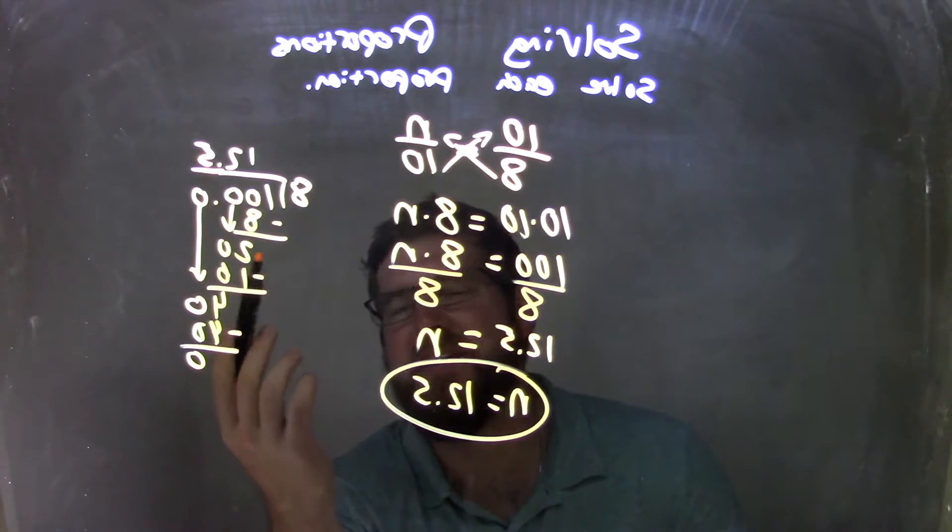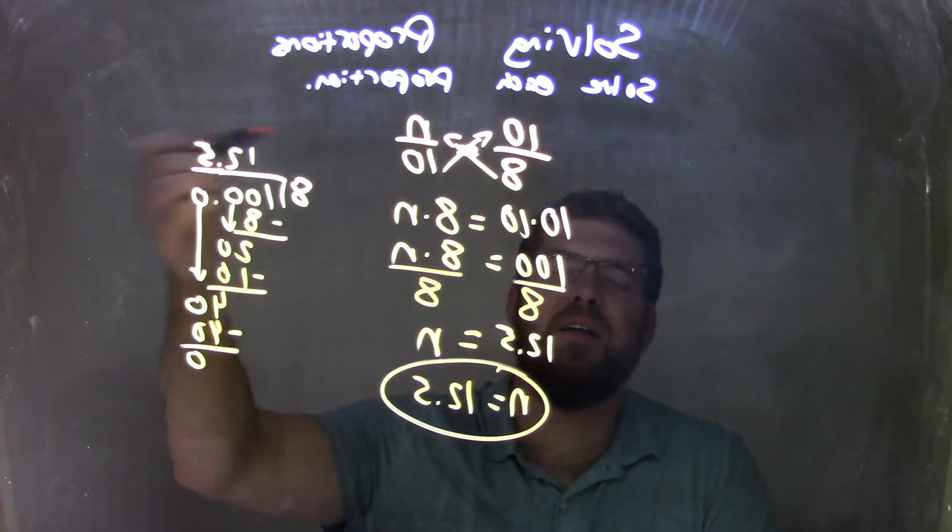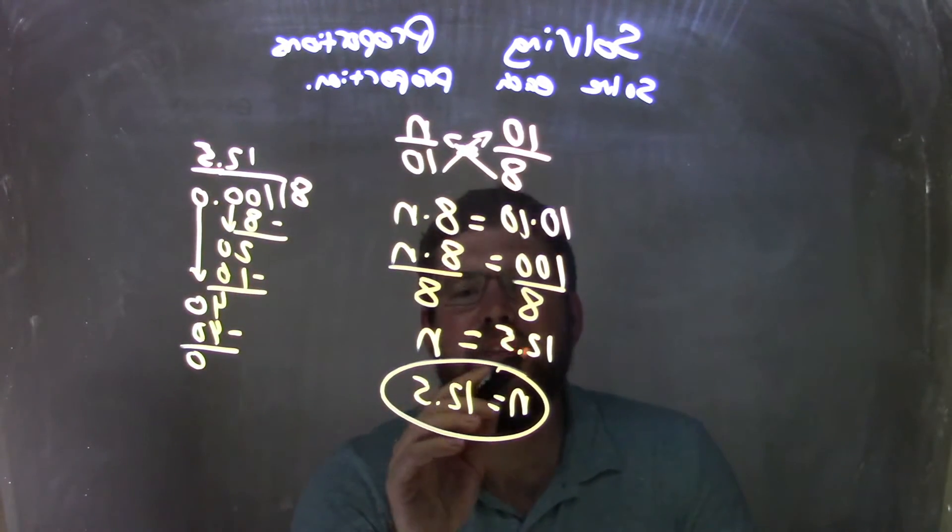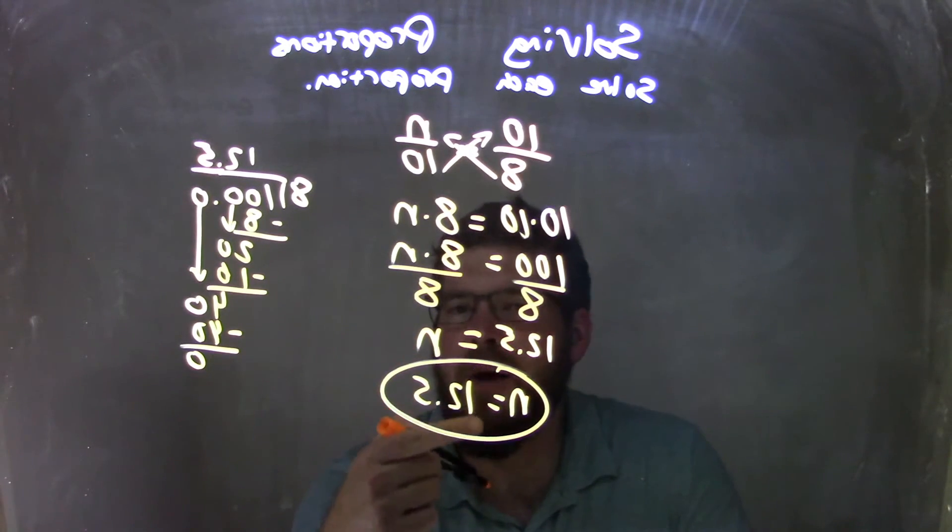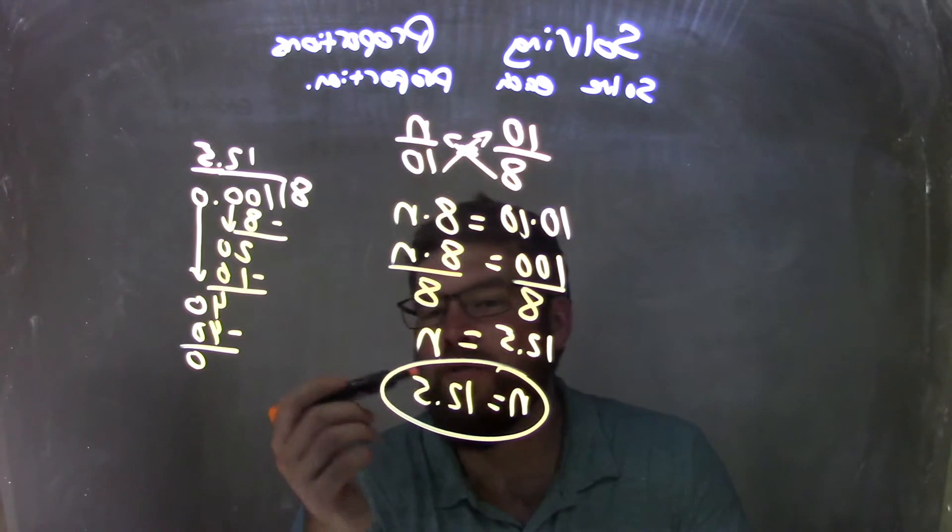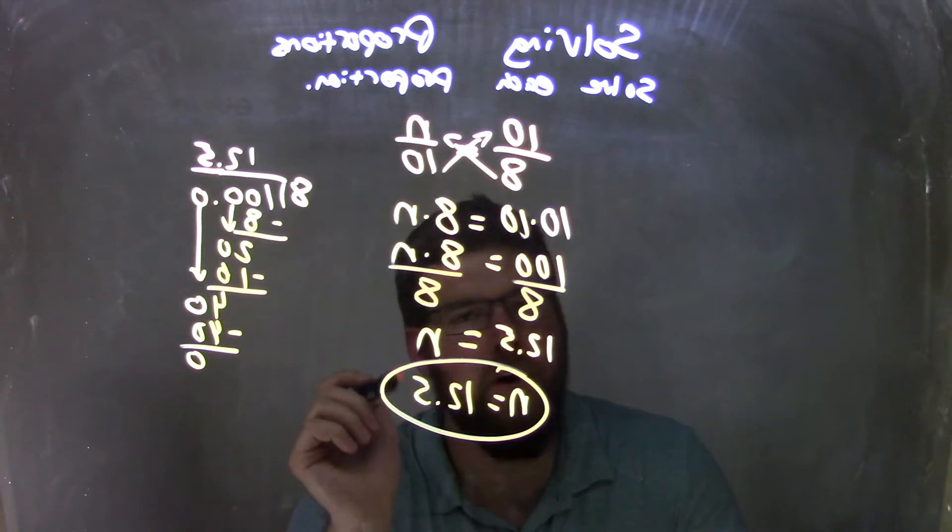8 goes into 100, 12.5 times, shown by our long division here, giving us 12.5 equals n. Let's write it nice and neat. Put n coming first, giving me n equals 12.5. And that is our final answer.